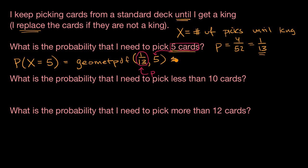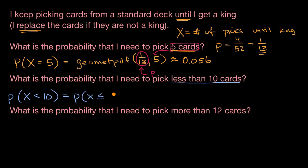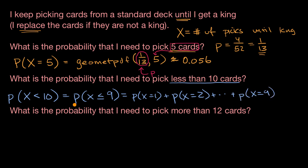So this is approximately 0.056. Now let's answer another question. What is the probability that I need to pick less than 10 cards? This is the probability that x is less than 10, or equivalently the probability that x is less than or equal to nine. I could sum the probability that x equals one through nine, but that would take a while. Luckily, there's a cumulative distribution function — geometcdf — and I pass it the probability of success on any trial and up to and including nine.